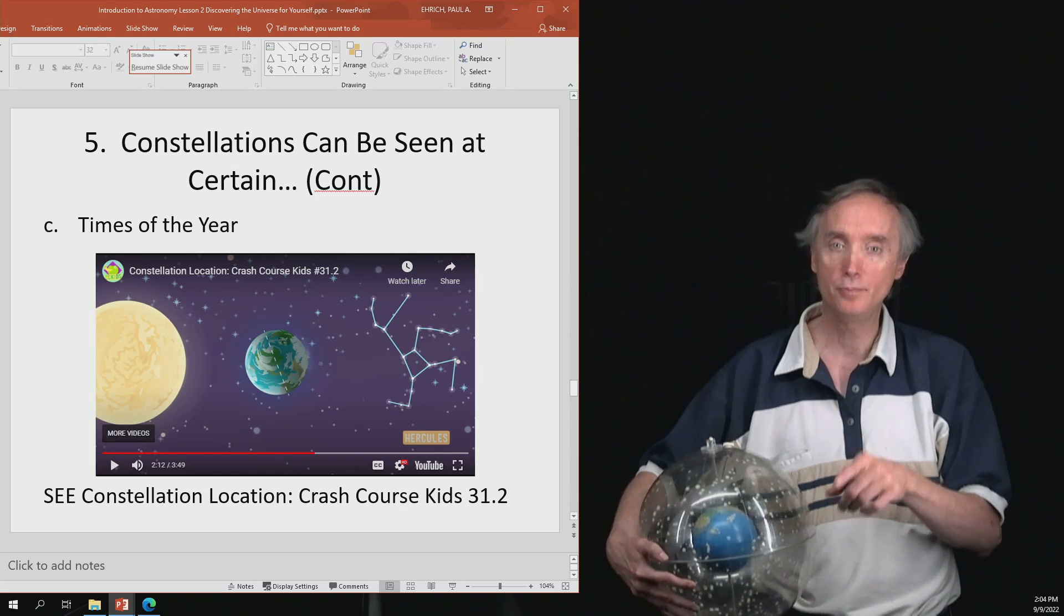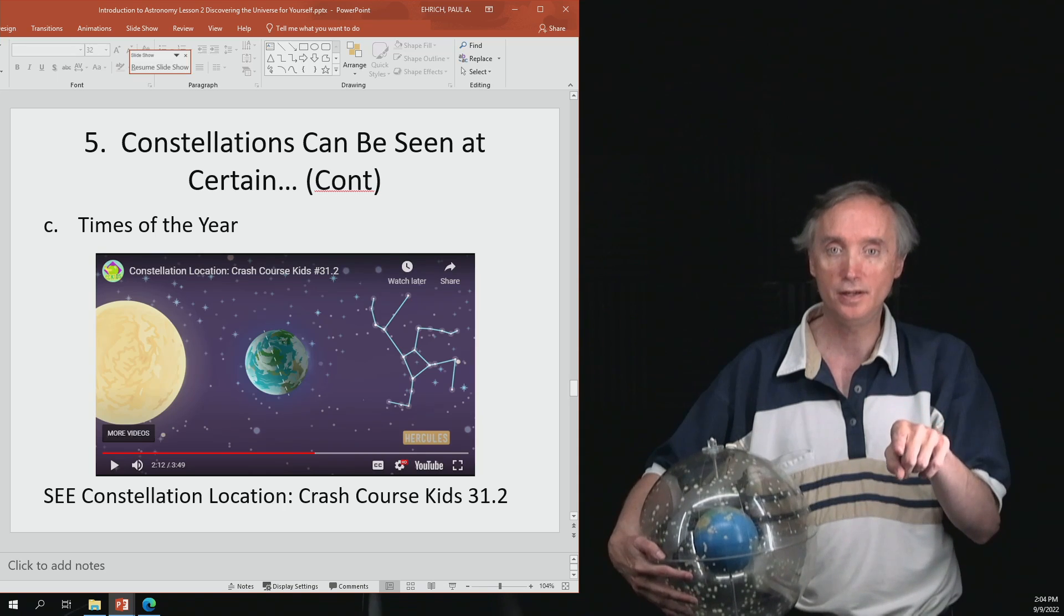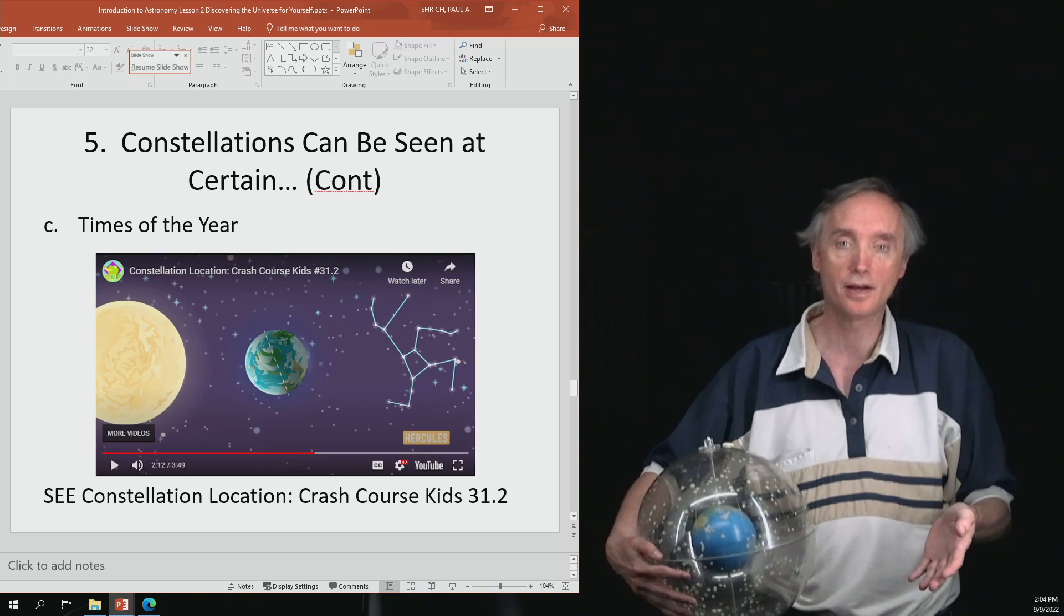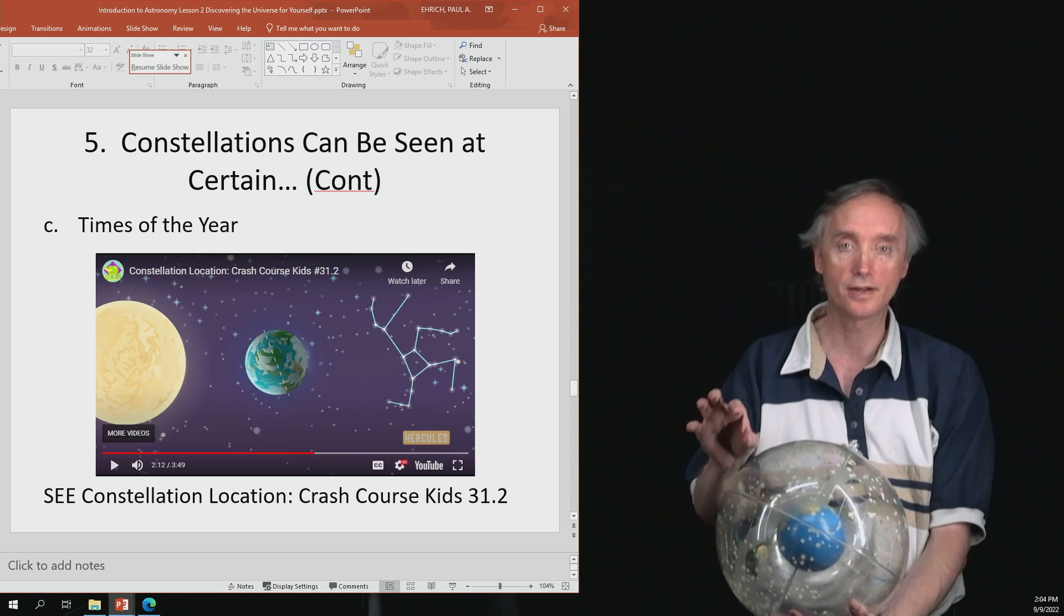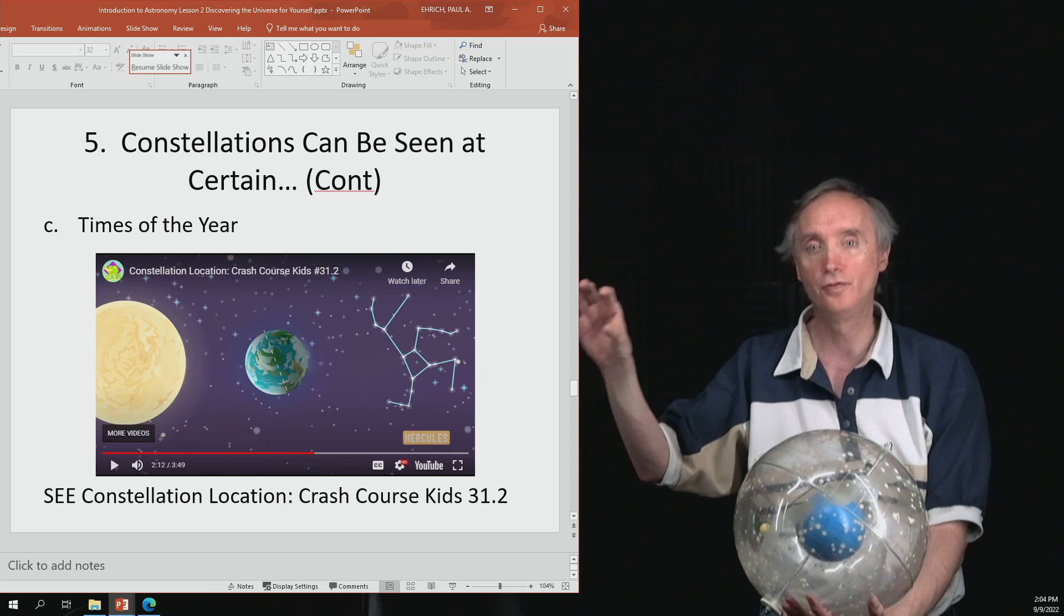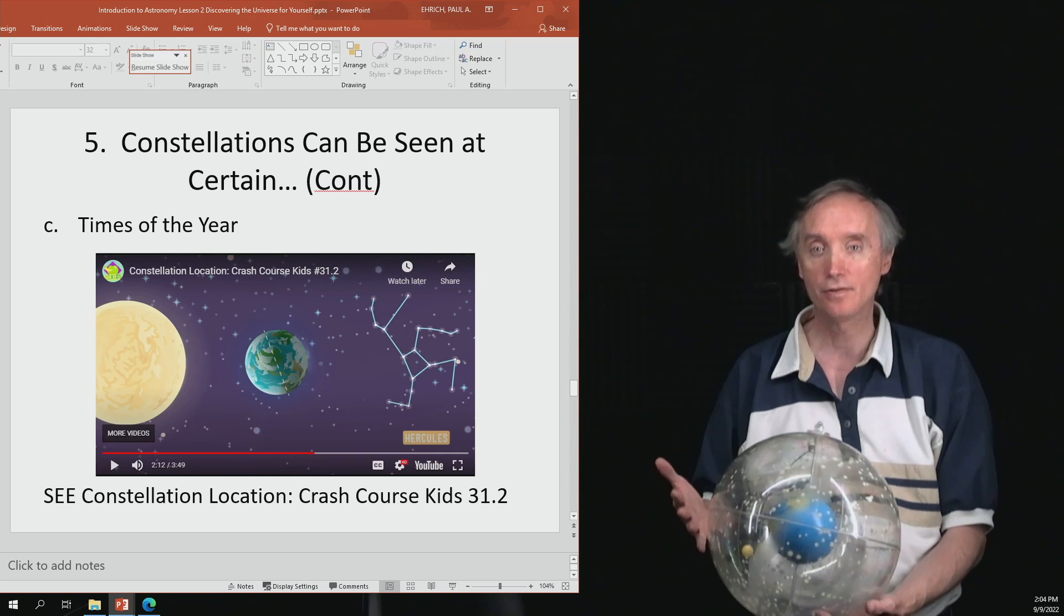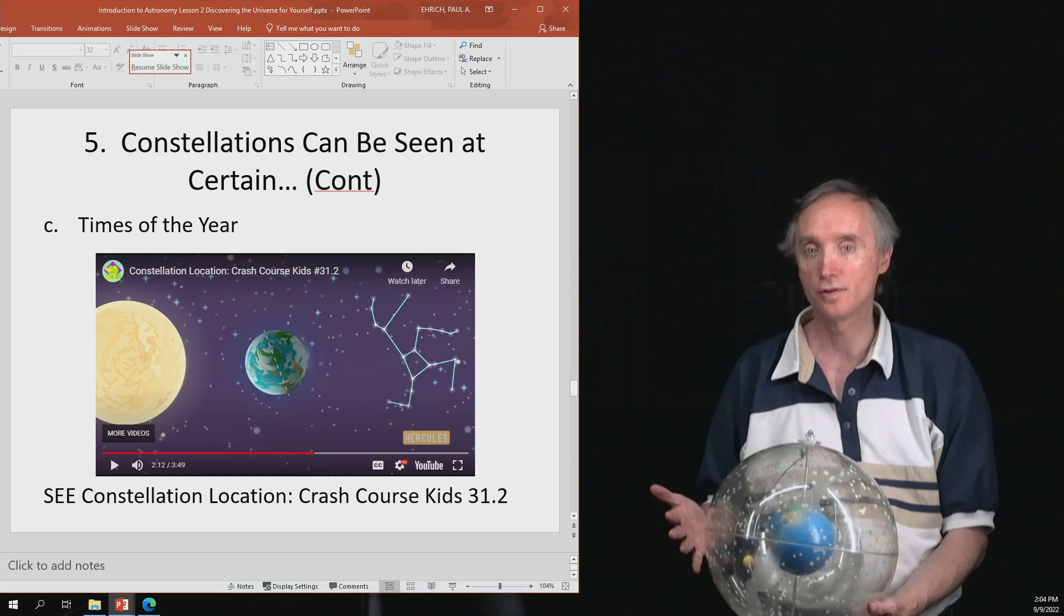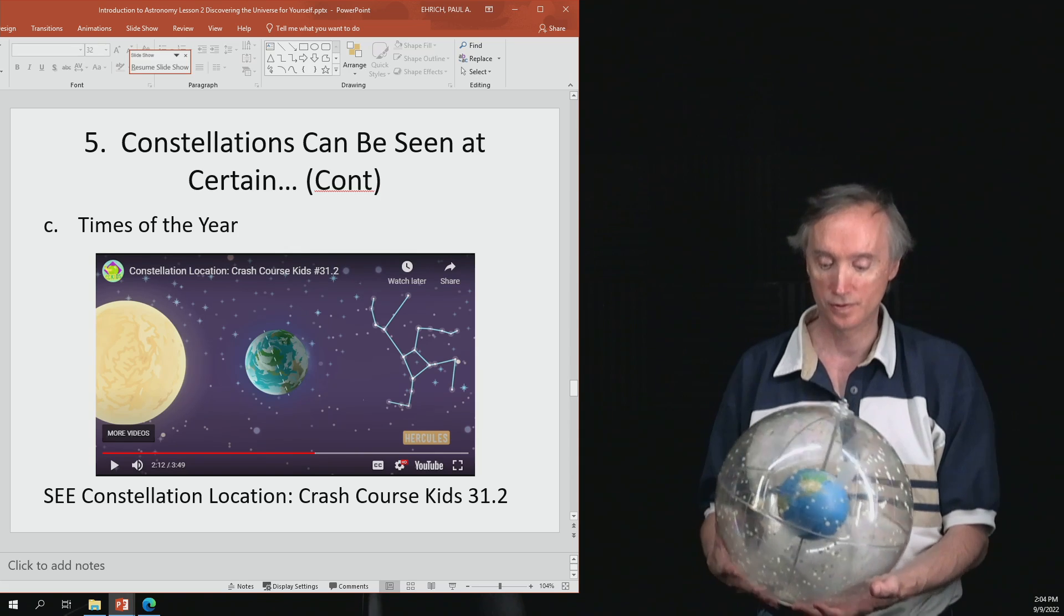So in that picture there, you can see that constellation very easily because it's on the night side of the Earth. But if you were to take that planet, Earth, and move it over to the other side of the sun, now the sun's in the way so that you cannot see that constellation.